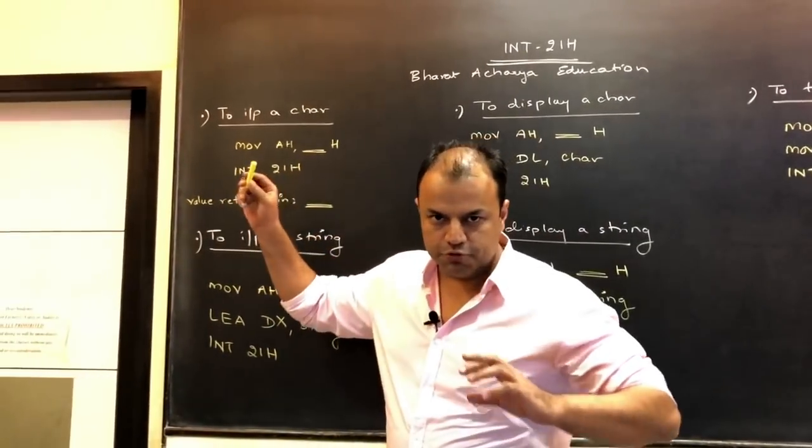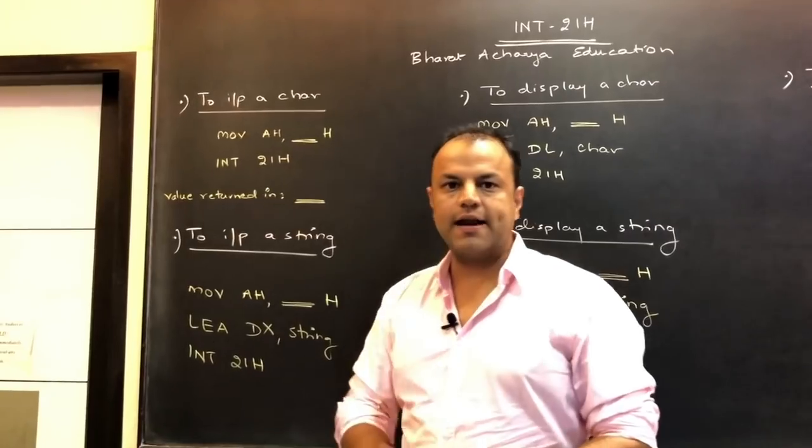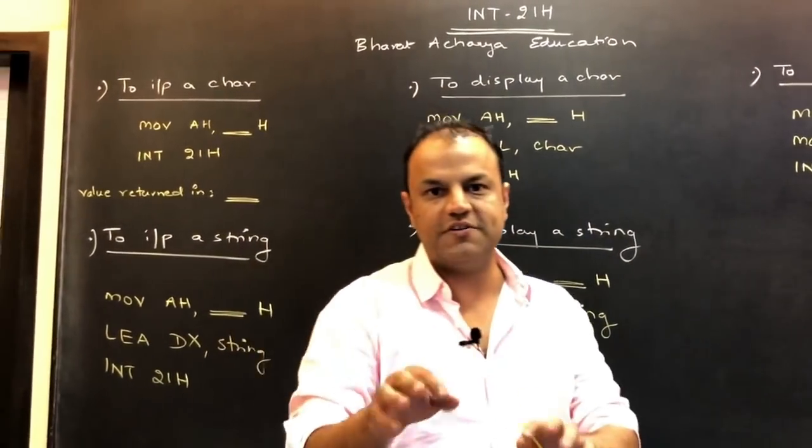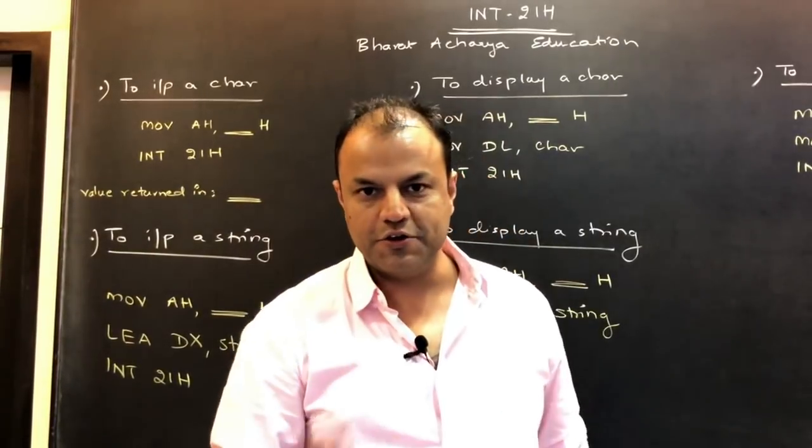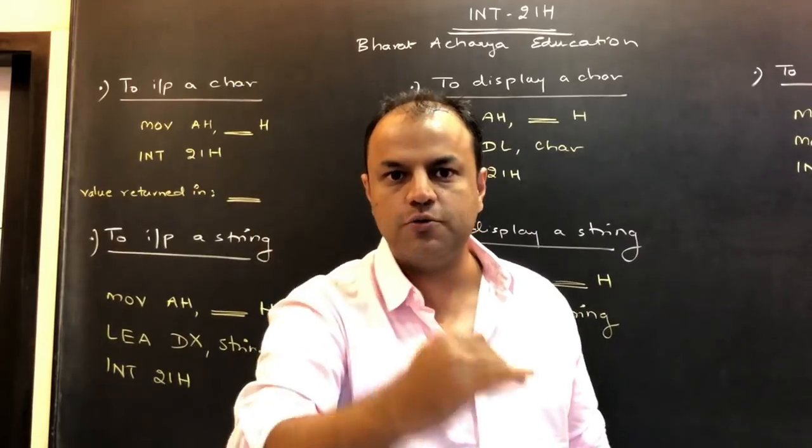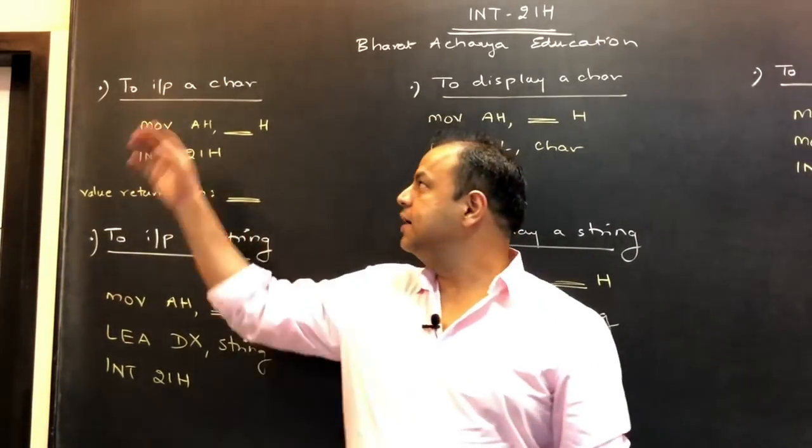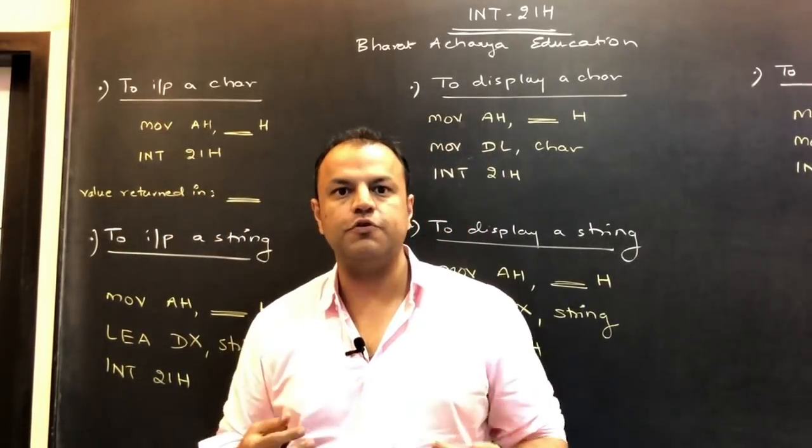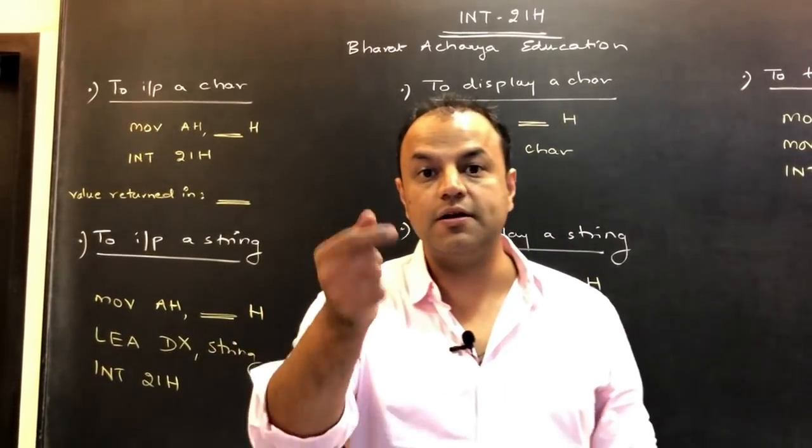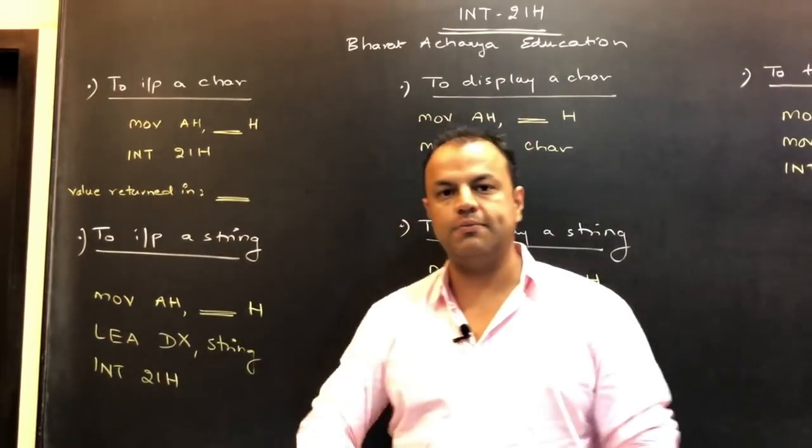The ones that are used regularly are to input a character. Like in a C program, when you type CIN, what happens in that command CIN, suppose you write CIN and X and when you execute that line, the cursor is blinking and whatever the user enters comes into that variable X. Similarly, to input a character from the user, if you want the user to enter numbers for you, like write a program to add two numbers, but the numbers should be taken in from the user, you need to use INT-21.